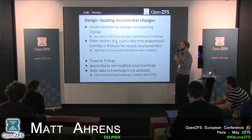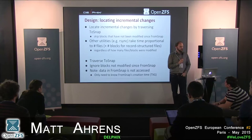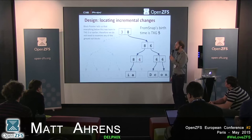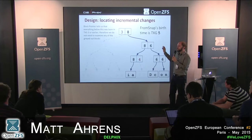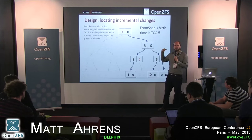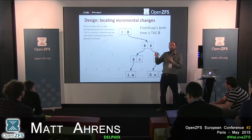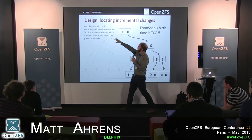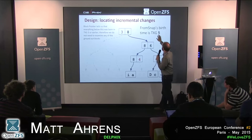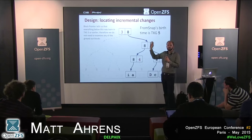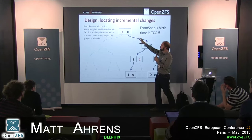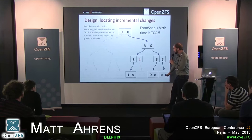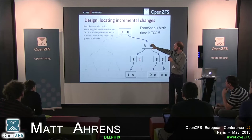Locating the incremental changes is one of the more interesting aspects. To find the incremental change, we only look at the to-snap — the snapshot we're actually sending. All we need to know is the time the from-snap was created. In this example, the from-snap is in txg5, so we need to find all changes that happened since time 5. We look at the tree of blocks: user data is in leaf blocks, interior nodes are indirect blocks pointing to other blocks, and each pointer records when the block it points to was written.